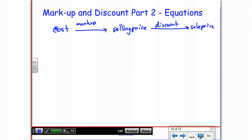When you find the markup percent and discount percent, or percent markup and percent discount, percent markup is out of the cost, so it's markup over cost is the percent markup. And then the percent discount is the discount over selling price. That's how you calculate these.